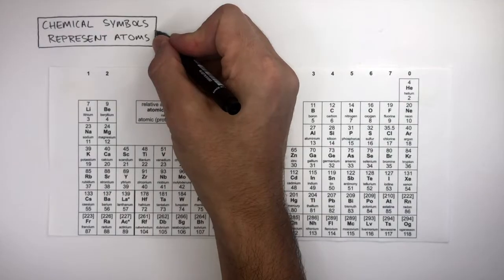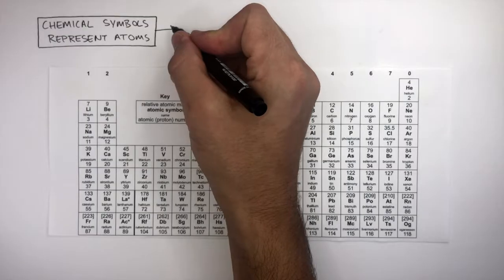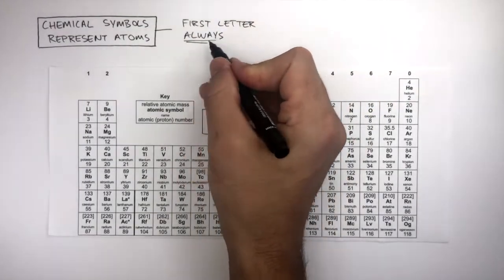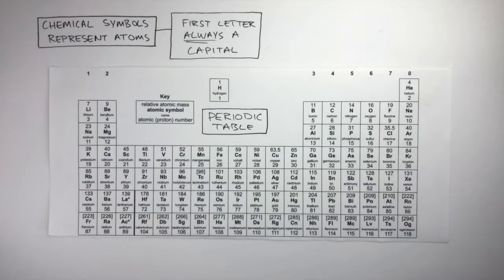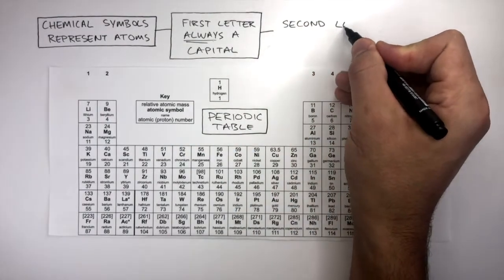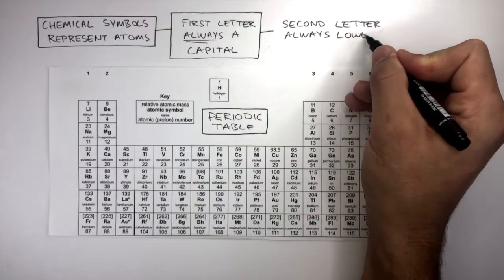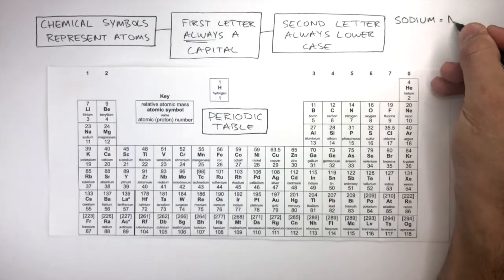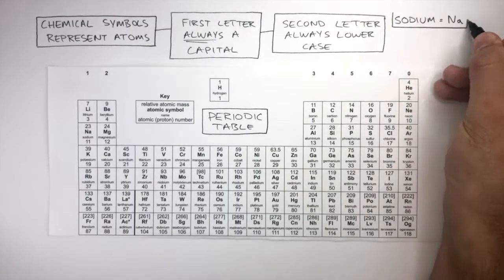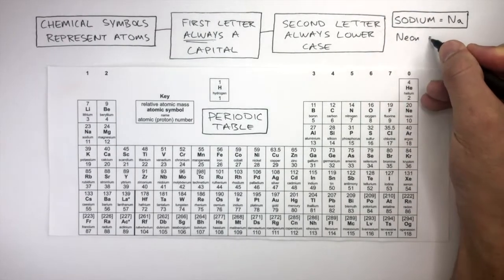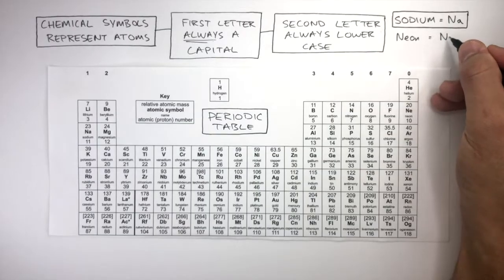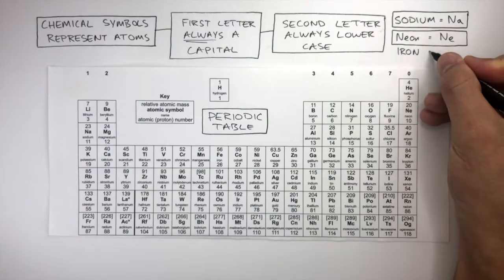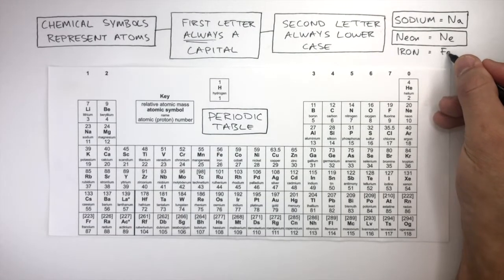When writing chemical symbols, it's really important to remember this rule. The first letter is always a capital letter. And if there is a second letter, it is always lowercase. For example, Sodium is written as capital N, lowercase a. Neon is written as capital N, lowercase e. Iron is written as capital F and lowercase e.